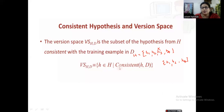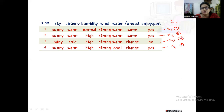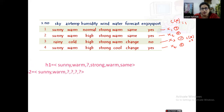Let us see this with the help of an example. This is the enjoy sport dataset. Here we have four instances, let us call them x1, x2, x3 and x4. The positive instances are x1, x2 and x4 because their target concept is yes. Only x3 is a negative one. If it is positive, c of x value is 1, otherwise c of x value is 0. Now let us take hypotheses h1, h2 and h3 and see how many of them satisfy all the instances.